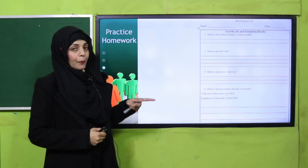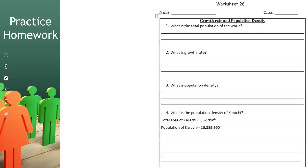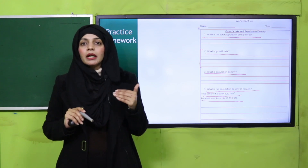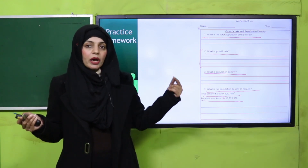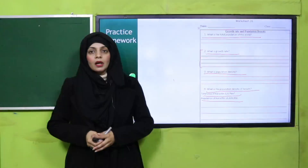For practice, you can download worksheet number 26 from the description box below this video, or get it in print form from your teacher. Recap: the total population of the world is 7.8 billion. Growth rate is the increase in population with time. Population density is the number of people living per square kilometer. Now, what is the population density of Karachi? Total area of Karachi is 3527 square kilometers. Formula: total population divided by the area. You can calculate the population density per square kilometer — pause the video and quickly complete it.